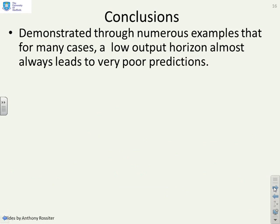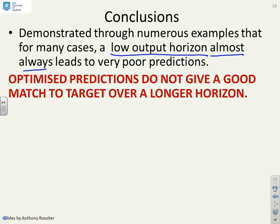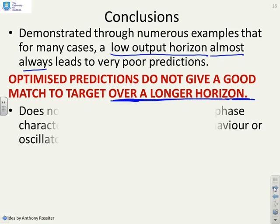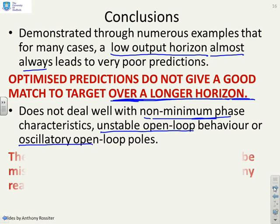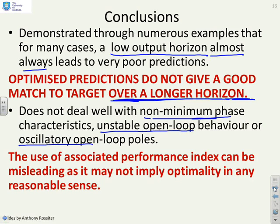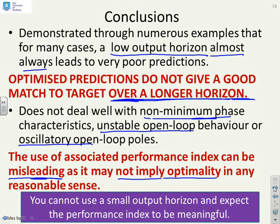So conclusions. We've demonstrated through many examples that a low output horizon almost always leads to very poor predictions. And the optimized predictions do not give a good match to the target over a longer horizon. So that's a key thing. You need to make sure the optimized predictions actually match the target over a longer horizon. If you use low output horizons, they don't deal well with non-minimum phase characteristics. They don't deal well with unstable open loop behavior or with oscillatory open loop poles. The use of an associated performance index can therefore be very misleading as it actually does not imply optimality in any reasonable sense. So being optimal over a short prediction horizon doesn't mean you're going to be optimal in the long term. And in summary again, you cannot use a small output horizon and expect the performance index to be meaningful.